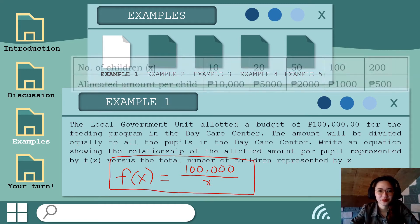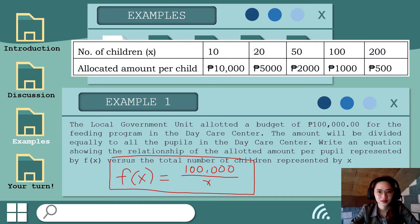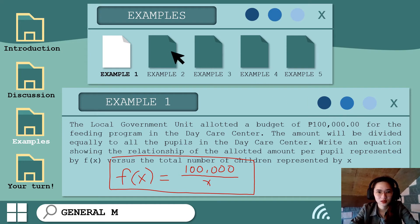Halimbawa yung number of children natin ay 10. So yung allotted amount per child is 10,000. Kung 20, 5,000. Kung 50, 2,000. Kung 100, 1,000. And 200, 500 pesos per pupil. So ganun lang po yan. Proceed tayo sa example number 2.